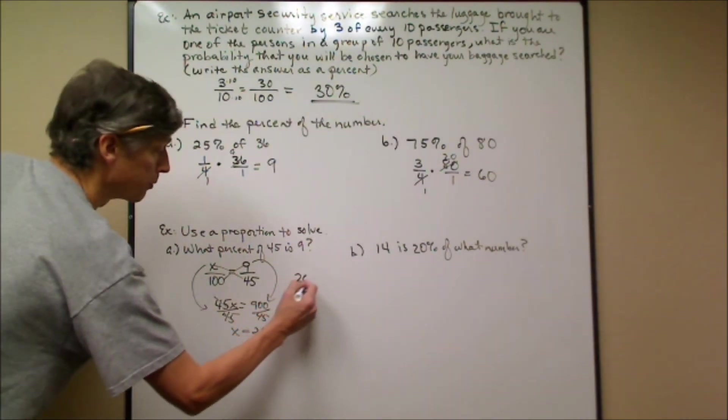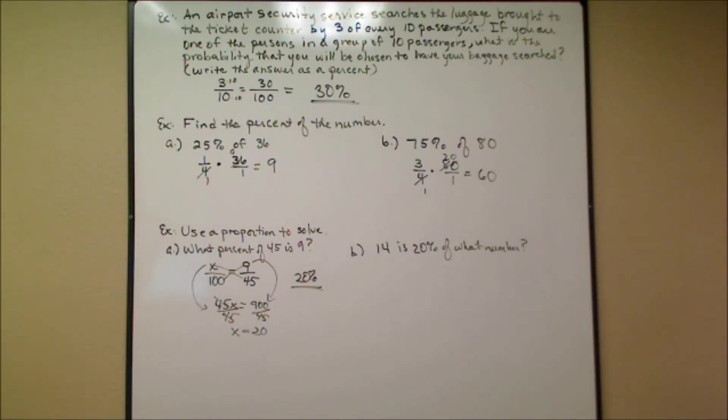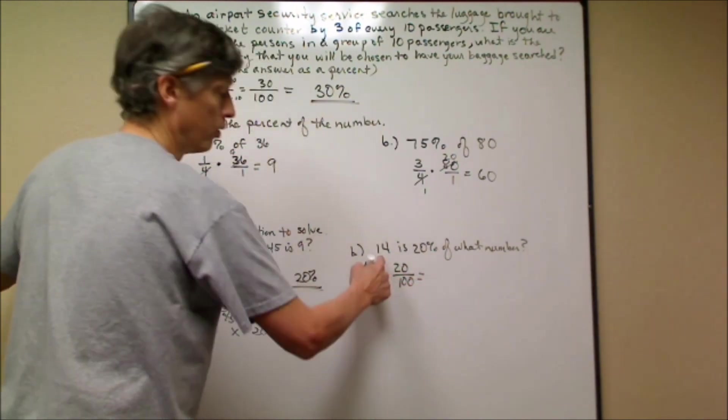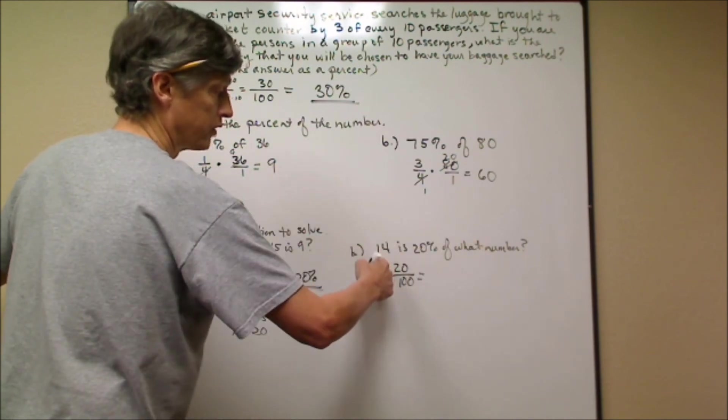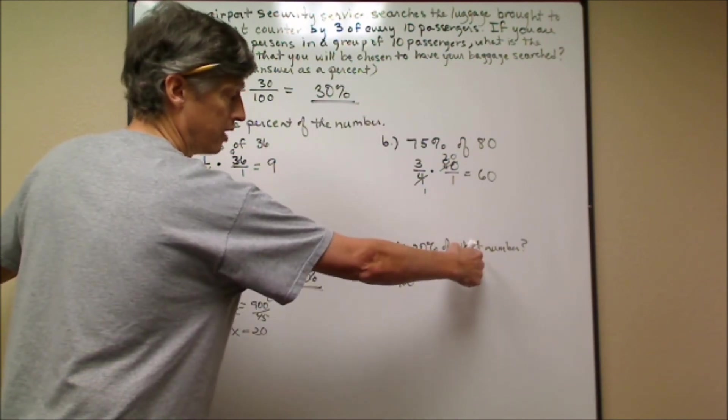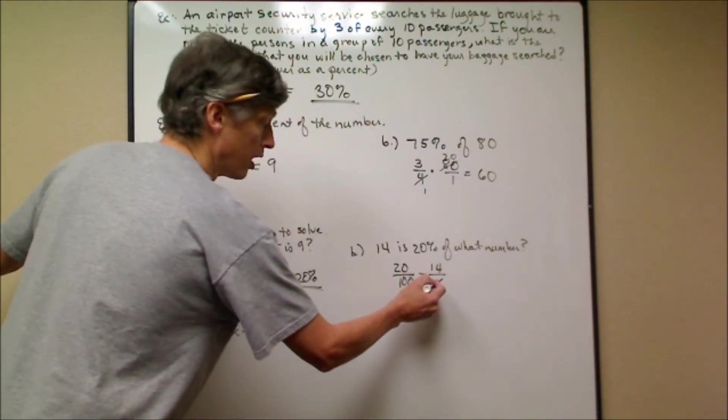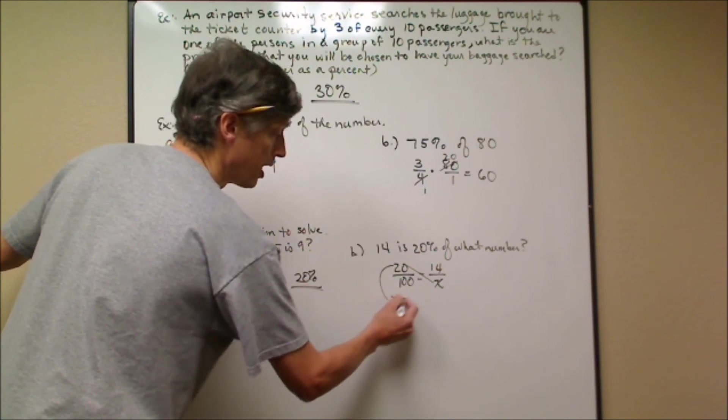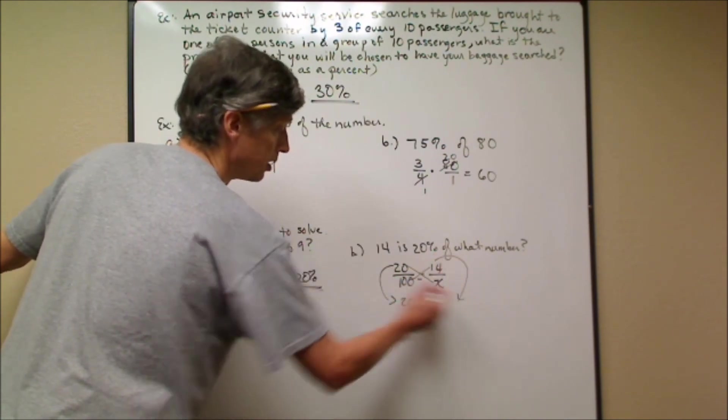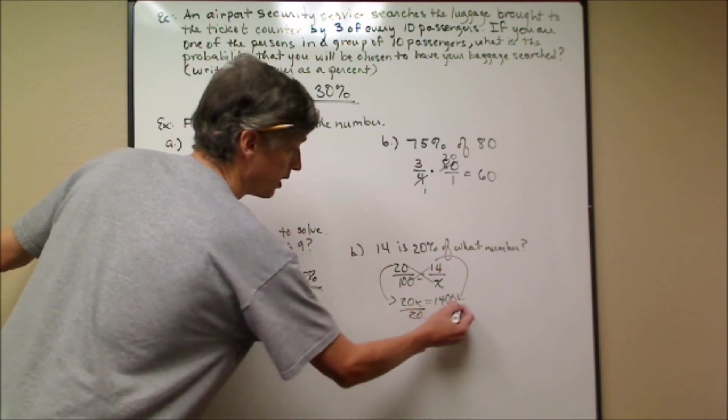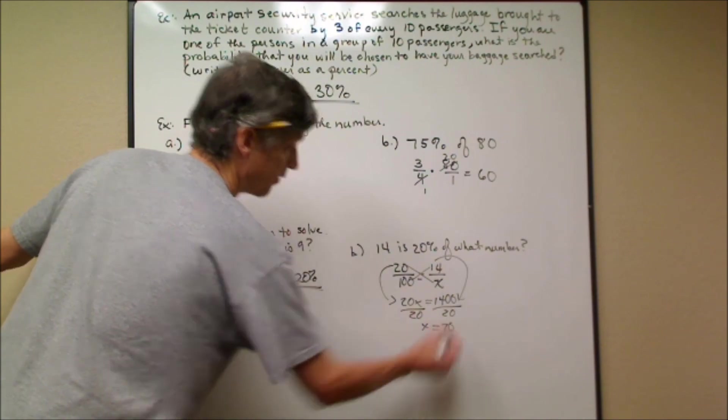The second one: we're given the percent. It says, '14 is 20% of what number?' 20% means 20 out of 100. So, 20% of what number is 14? That means 14 out of this number. This is our variable. So, 14 out of x. I'm going to cross multiply. I get 20x equals 100 times 14, or 1400. I'm going to divide both sides by 20, and I get x is equal to 70. Not 70%, but 70, because it says 'what number,' not 'what percent.'